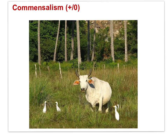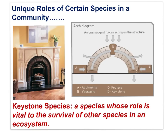Now we examine unique roles of certain species known as keystone species. Keystone species are species whose role is vital to the survival of other species in an ecosystem. They maintain higher diversity than the system would have without them. Without the keystone species, other species in the ecosystem are likely to disappear and the ecosystem becomes less diverse. Just as the keystone in an arch is critical to the arch's integrity — without it the arch falls apart — without the keystone species, the ecosystem holds together less well and is less diverse.